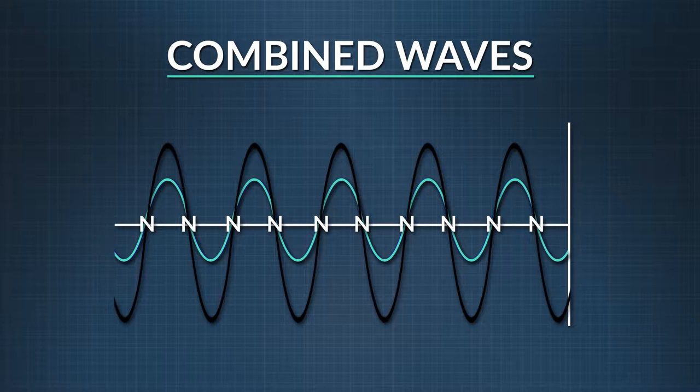The places on the standing wave, where the wave has its maximum amplitude, or where constructive interference occurs, is called the anti-node.